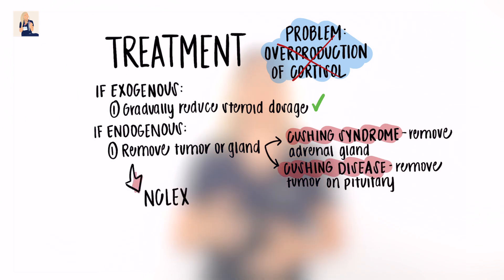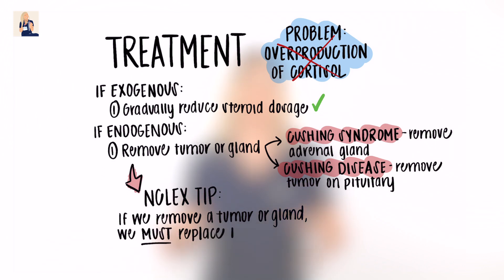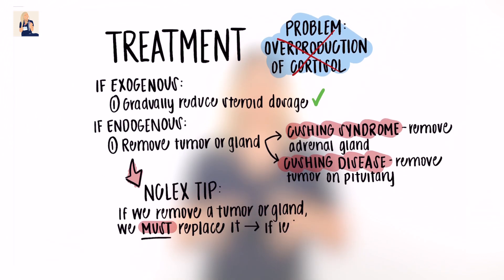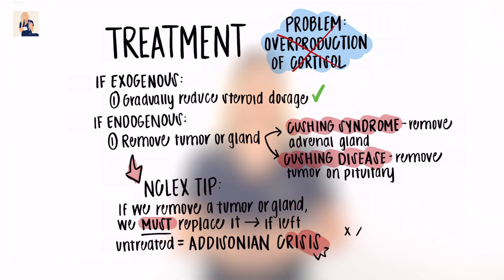NCLEX tip: if we remove a tumor or gland, we must replace the hormones that are lost with lifelong steroid therapy. If left untreated and there's an abrupt halt in cortisol production, the patient may enter Addisonian crisis.